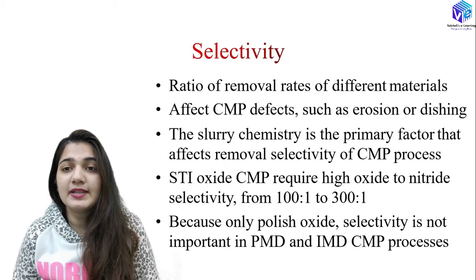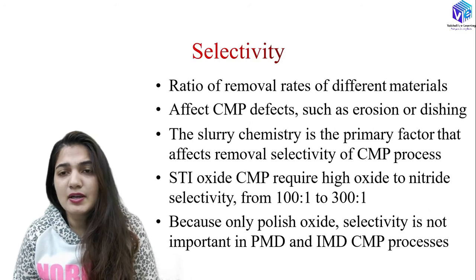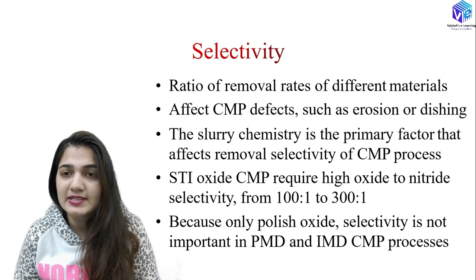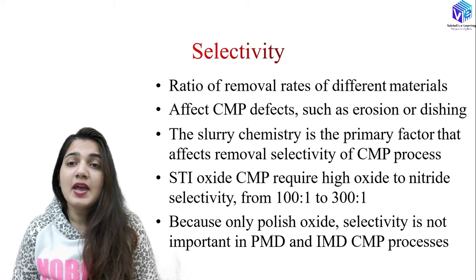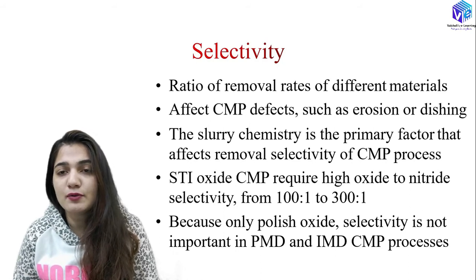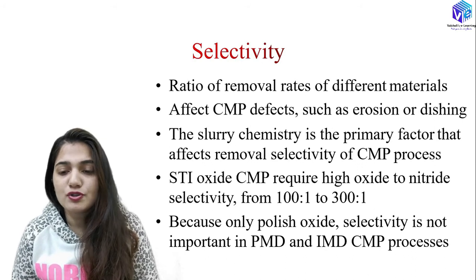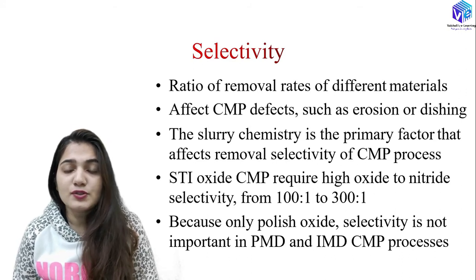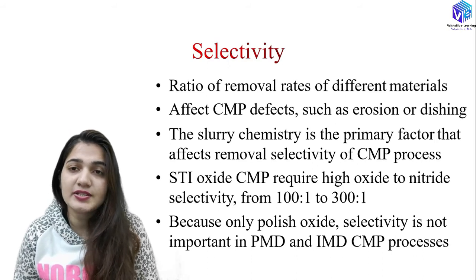Now coming to selectivity. Selectivity is the ratio of removal rates of different materials. A wafer can have different materials at different locations — metallization layers, CMP layers, and dielectric layers — each with different removal rates under the same process. The slurry chemistry is the primary factor affecting removal selectivity. If you need to change selectivity, you change the slurry composition.